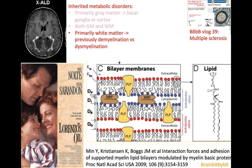In the past, leukodystrophies have been divided into demyelinating and dysmyelinating diseases. In demyelination, there's breakdown of already formed myelin; in dysmyelination, there's no normal formation of myelin. When you look at myelin at a molecular level, it's a very fatty substance consisting of about 75% lipids. So diseases affecting the lipid metabolism can lead to leukodystrophies.